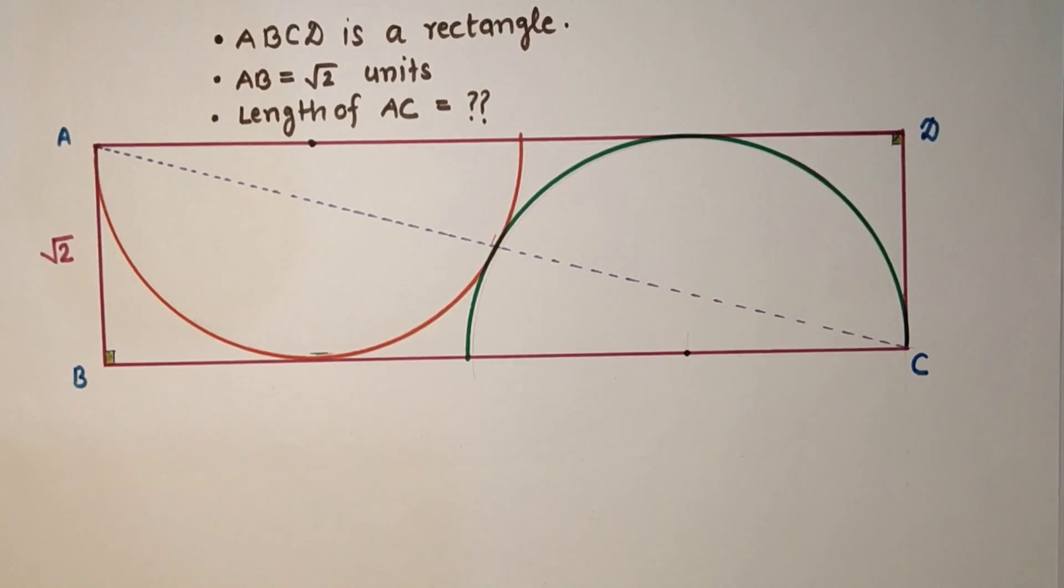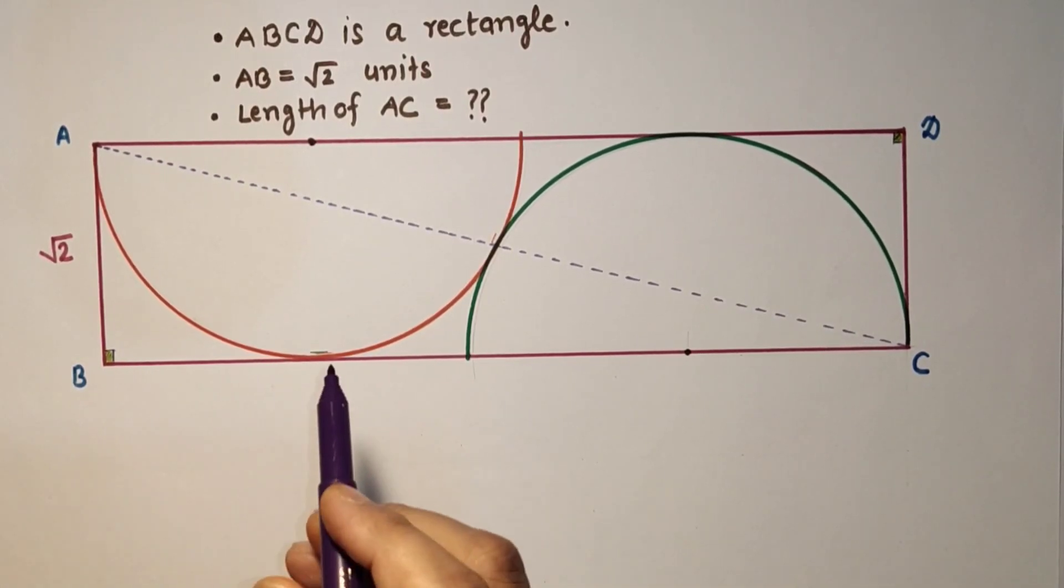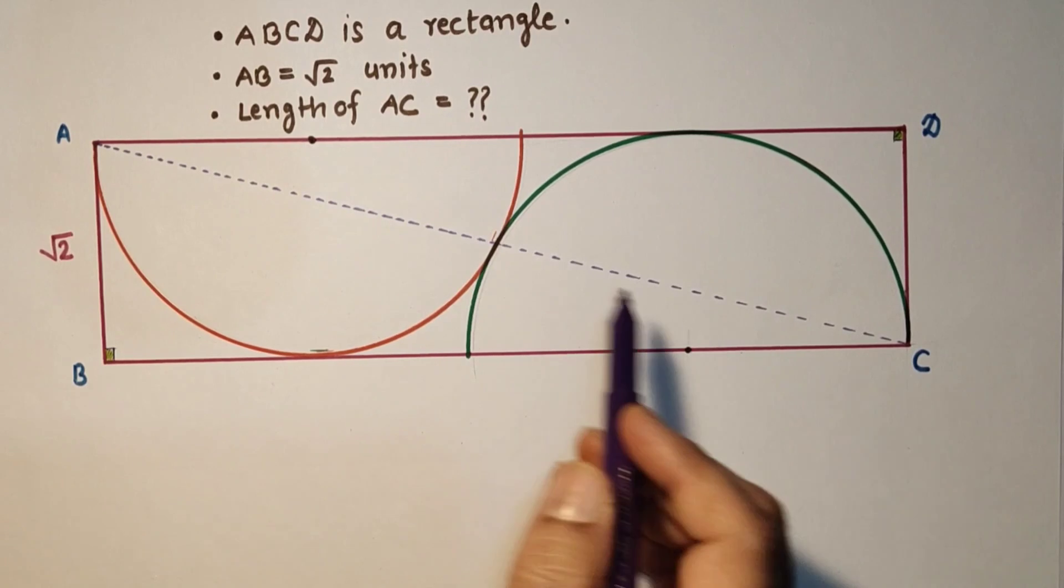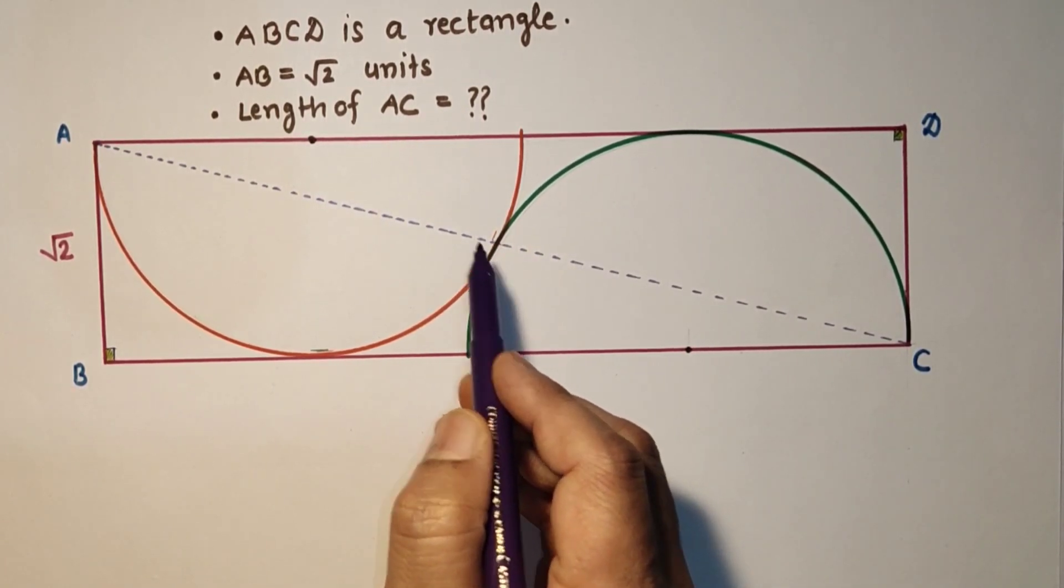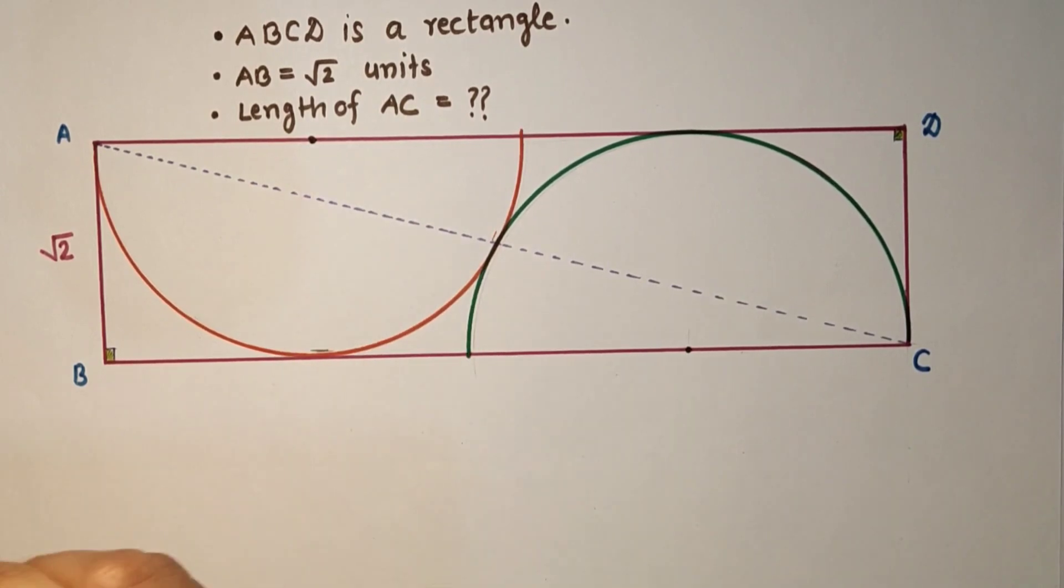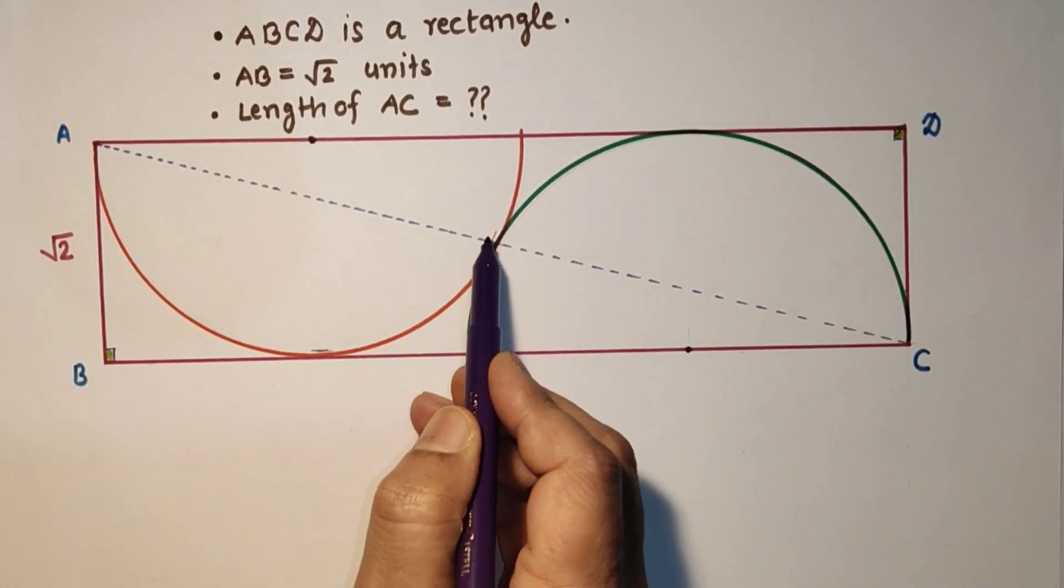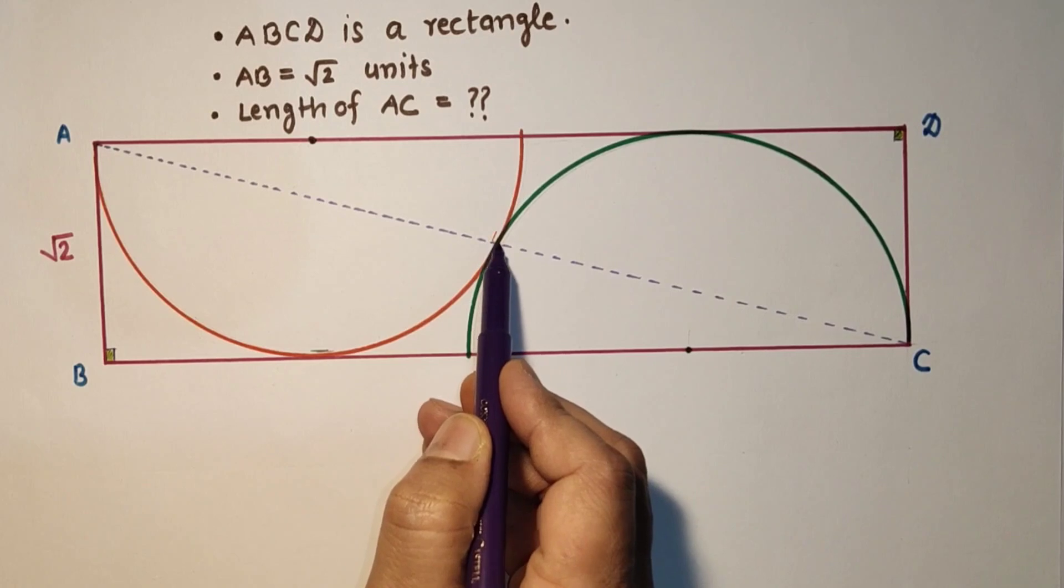So to solve this question, as we know that the two centers and the point of contact where the circles touch will lie in a straight line. So if we join these two it will pass through the point of contact, the touching point.